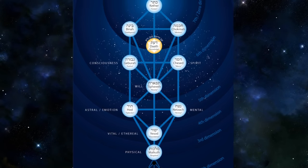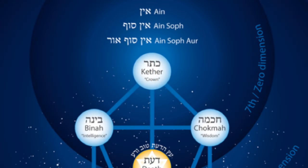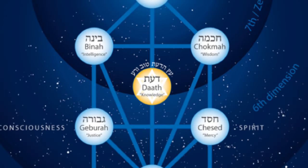At the top we have Keter. Then to the right, on what is called the Pillar of Mercy, we have Hokmah. Hokmah means wisdom — it's what we do with what we know. On the left-hand side from Hokmah we have Binah, B-I-N-A-H, which means understanding — this is simple knowledge. Chesed, on the right-hand side on the Pillar of Mercy, means mercy. On the left-hand side, the Pillar of Severity, is Geburah, which means severity. These are different aspects of how we deal with ourselves and others in the world. We can exercise self-control — which would be like Geburah — or we can exercise influence upon others, which would be Chesed.